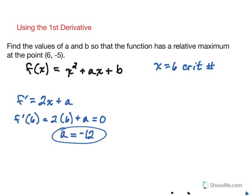So to find the other value, we can go back to the original function on which we knew the ordered pair. We know the y value was negative 5. So now that we know what a is, and we know the x value has to be positive 6, that can enable us to find b.